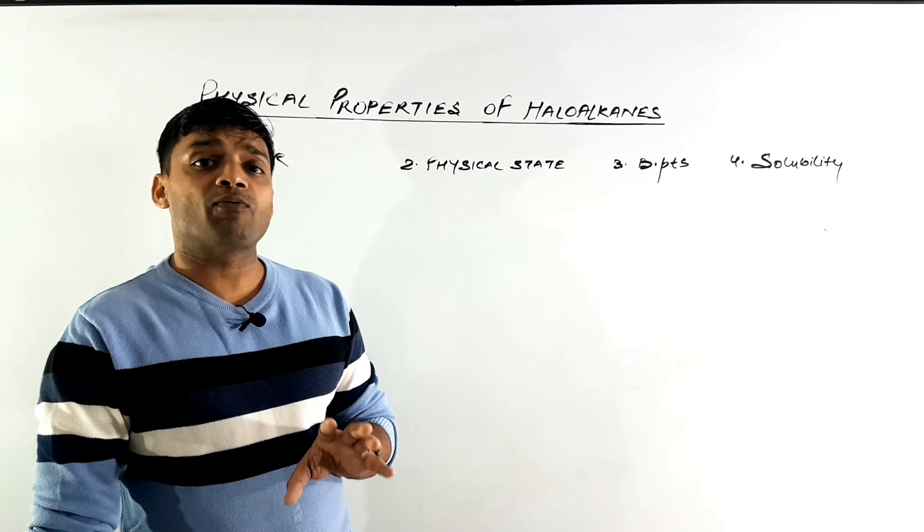In the second case, if we keep the alkyl group the same and replace the halogen atoms, comparing RI, RBr, RCl, and RF: the iodine atom is much bigger in size compared to the rest of the halogens. Due to its bigger size, it has greater surface area and even more electrons. So alkyl iodides are the highest boiling halides. As the size of the halogen atom decreases, the surface area and number of electrons decrease, and so the boiling point also decreases. These are the key trends for boiling points.